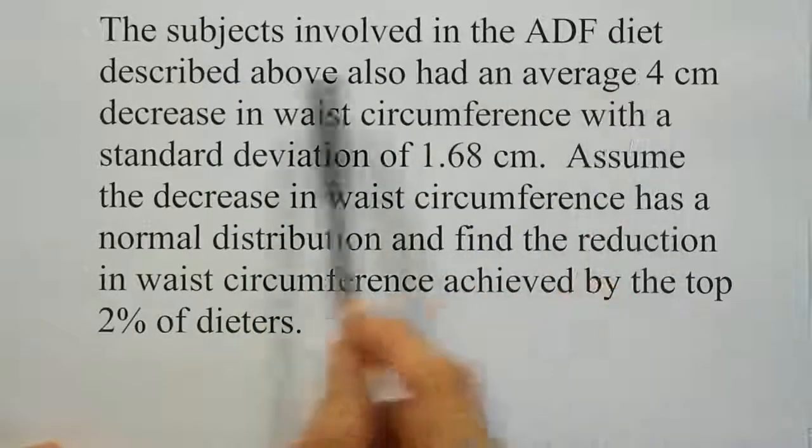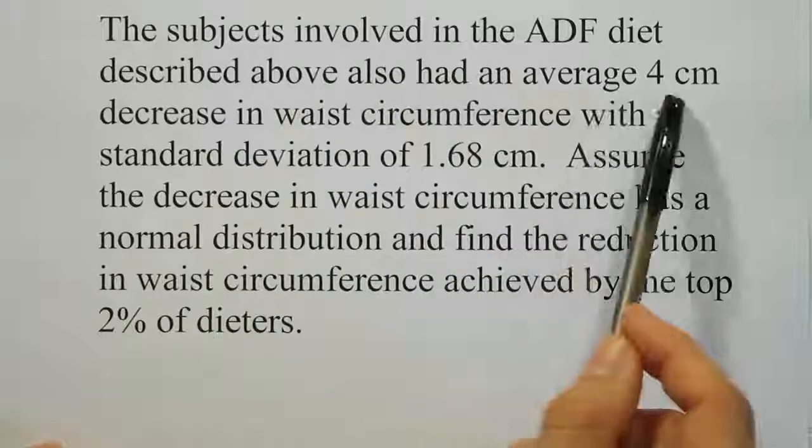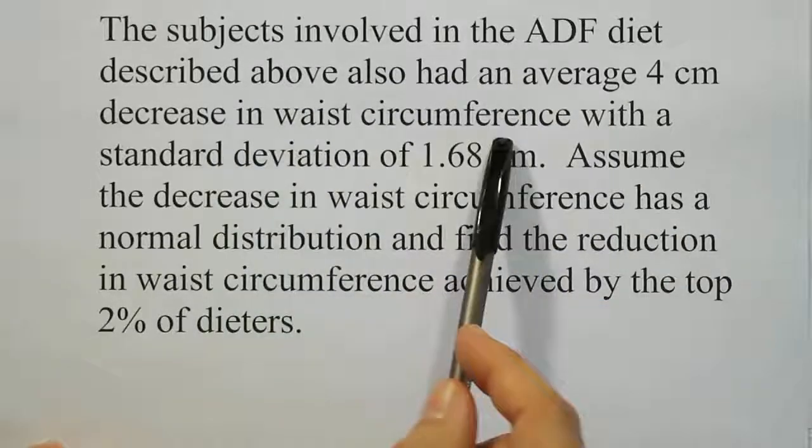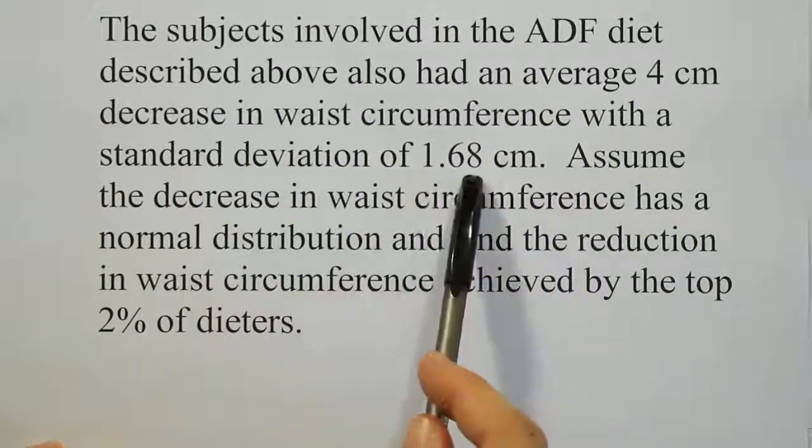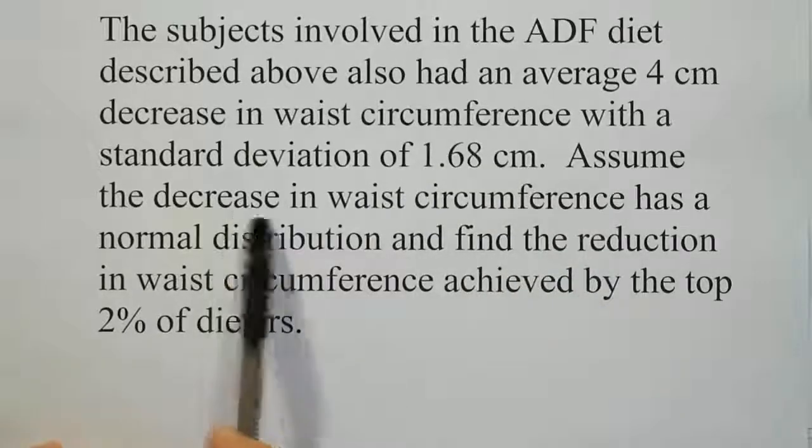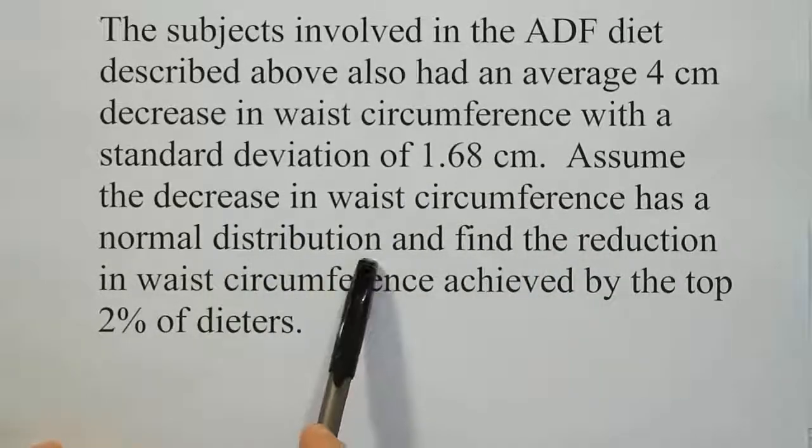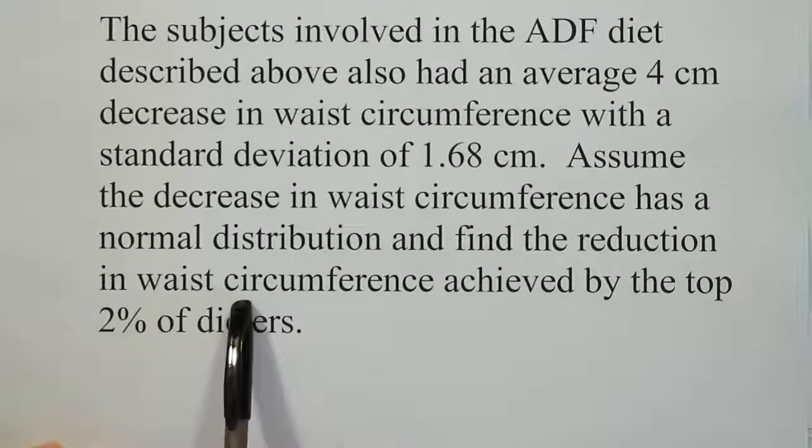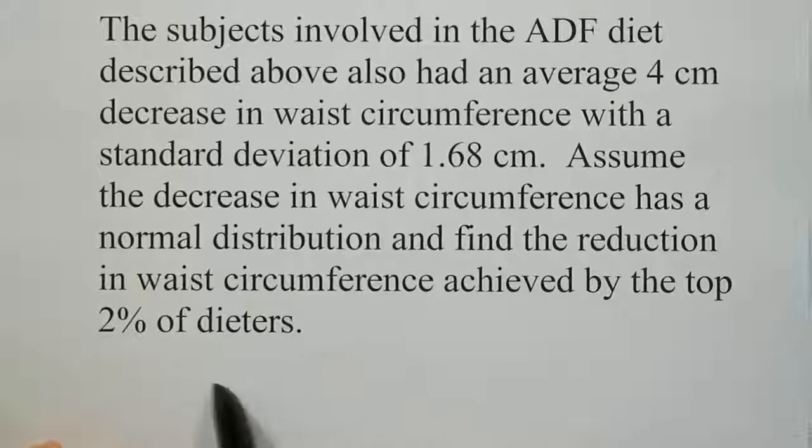The subjects involved in the ADF diet described above also had an average 4 cm decrease in waist circumference with a standard deviation of 1.68 cm. Assume the decrease in waist circumference has a normal distribution and find the reduction in waist circumference achieved by the top 2% of dieters.